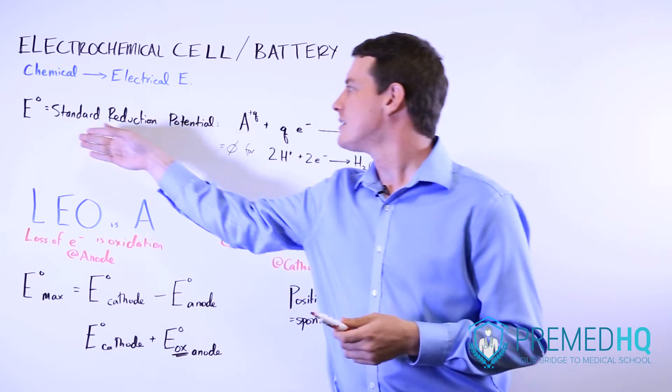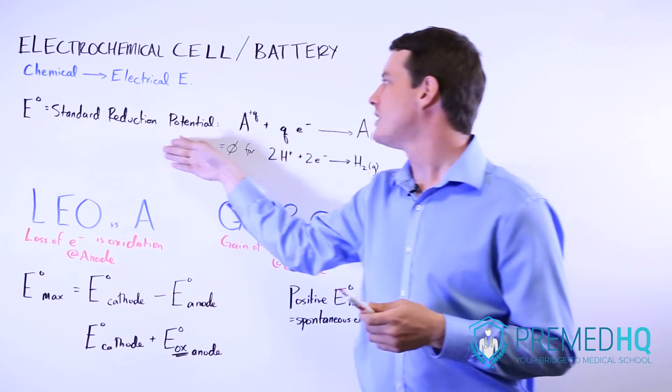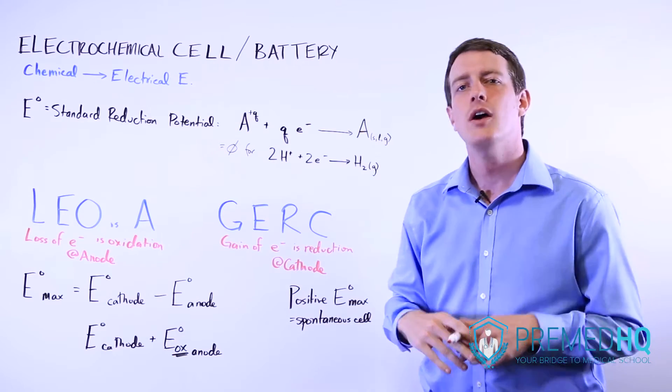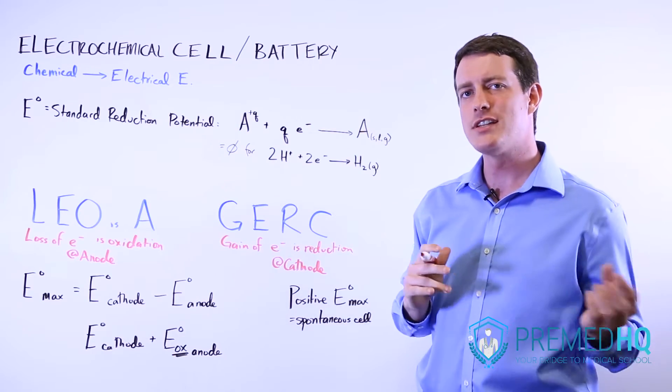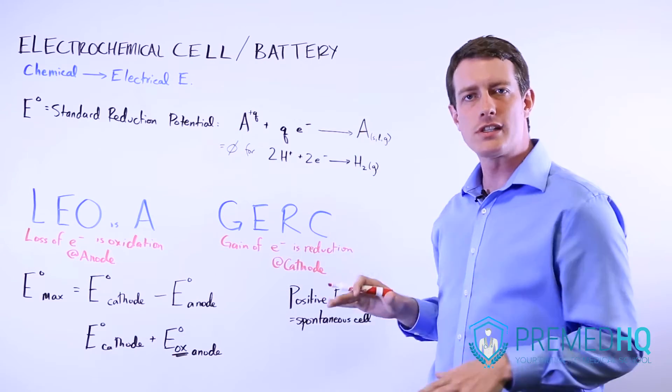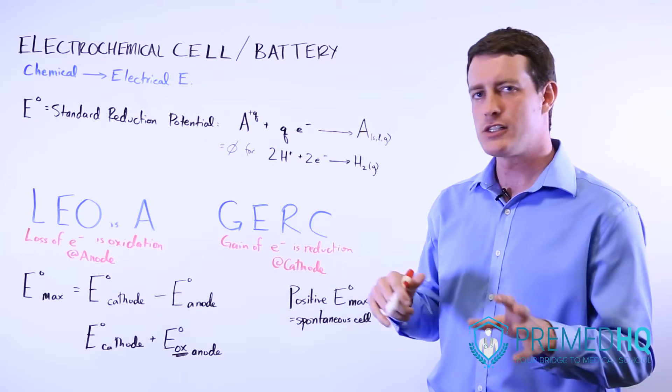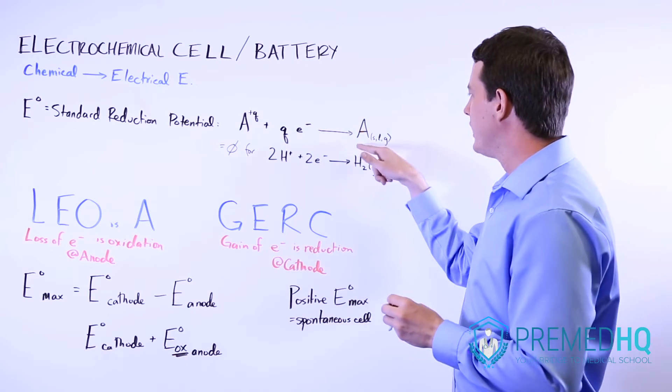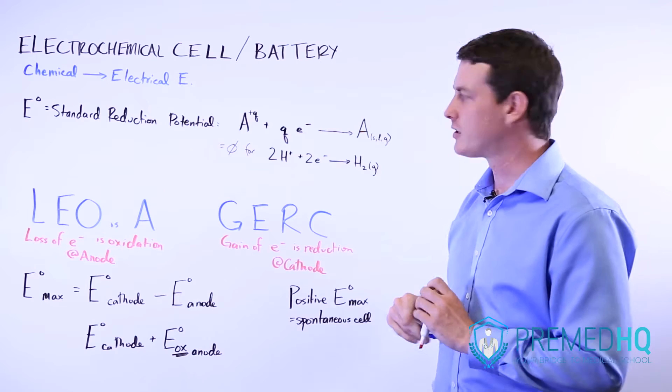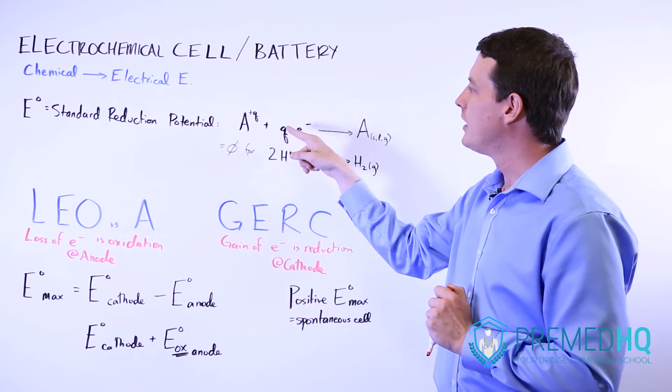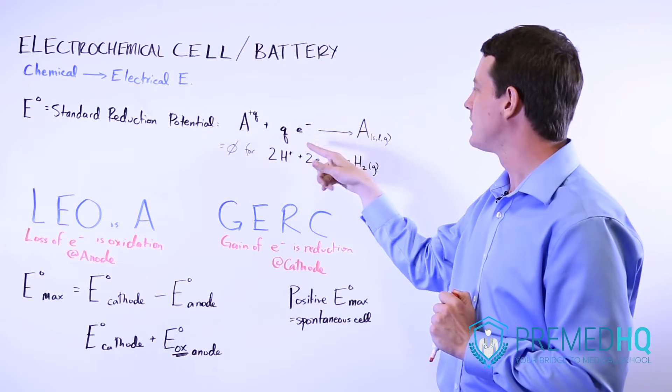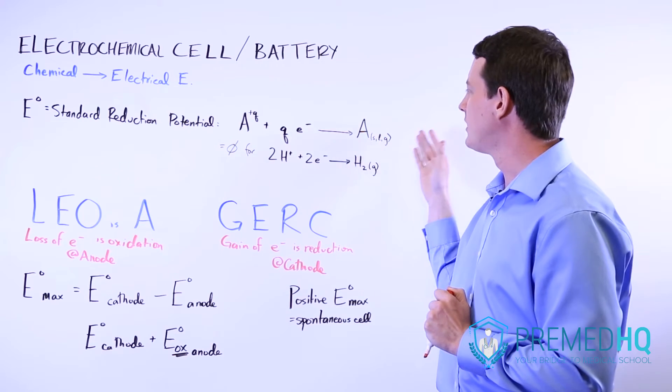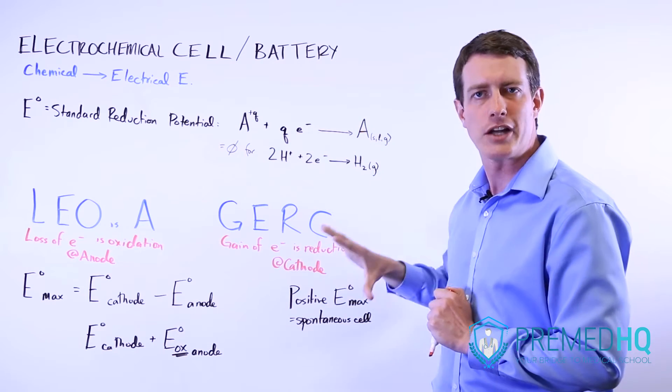The first thing to recognize is this E-standard here, or the standard reduction potential. What that is, is the amount of energy that is either released or used up when some ion is reduced into its neutrally charged form. So usually you'll see a cation gaining some number of electrons, and then it will become either a solid, liquid, or gas in its more natural form.